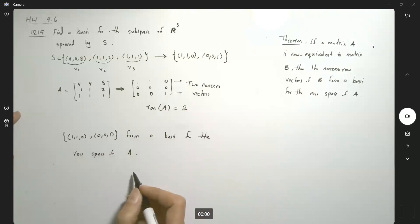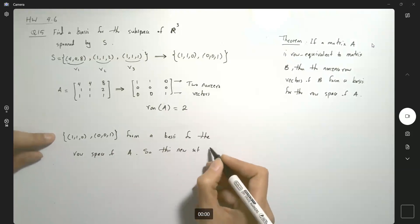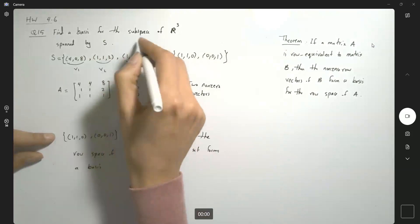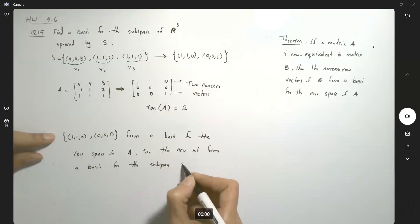What's the meaning of that? You can basically, so this new set with only two vectors forms a basis for this subspace, the subspace spanned by S.